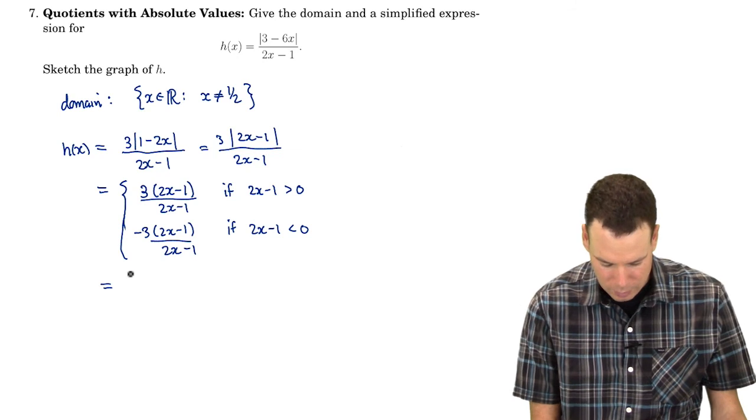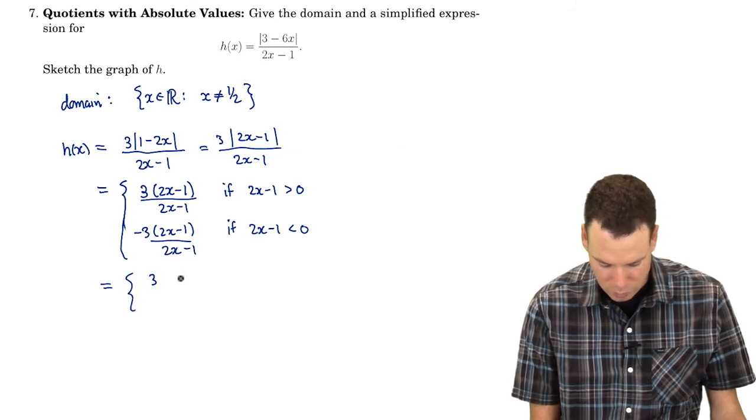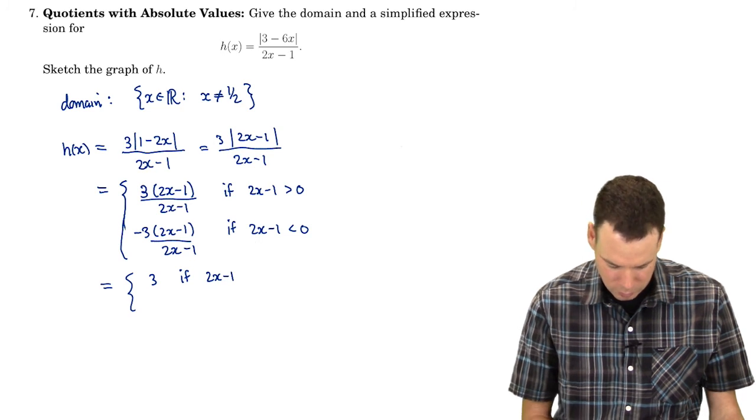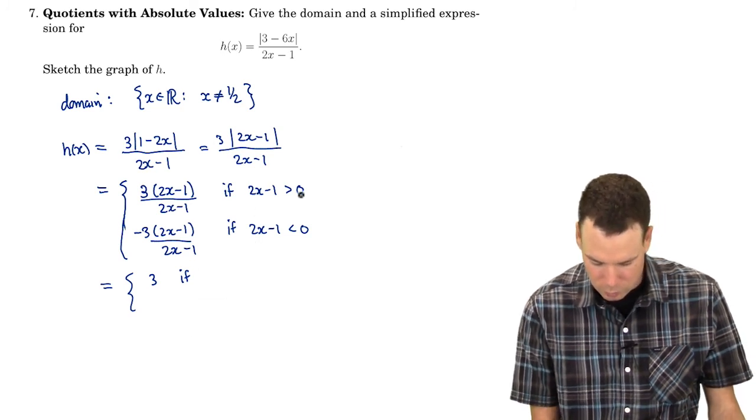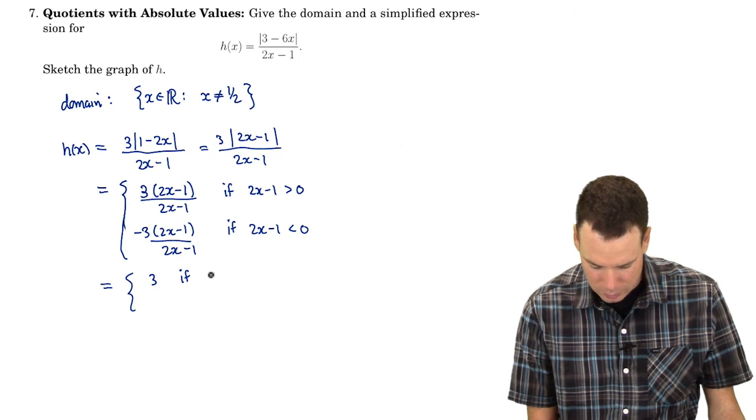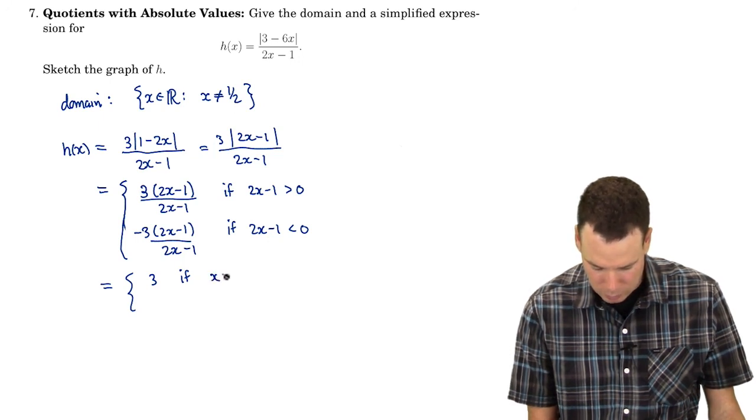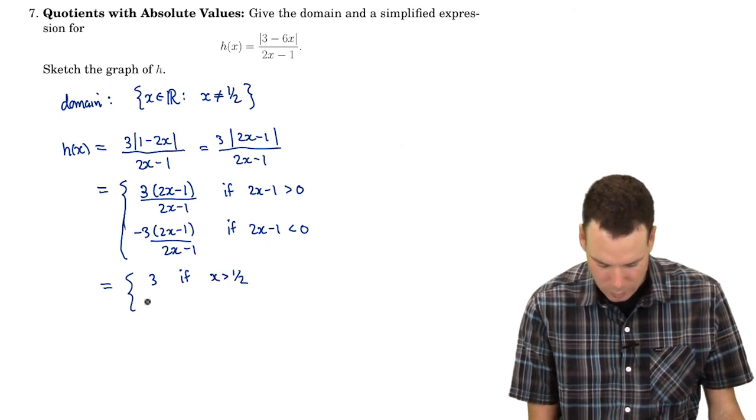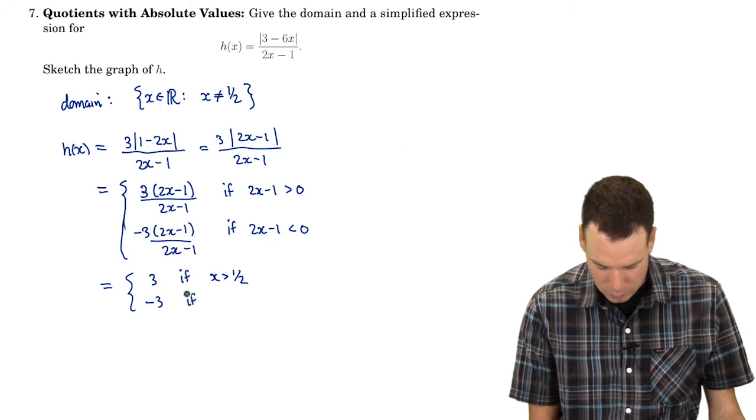And now I see that this function simplifies down to 3 if 2x minus 1 actually I can even write that in a better way. 2x minus 1 is positive that means x is bigger than a half and it's negative 3 if x is smaller than a half.